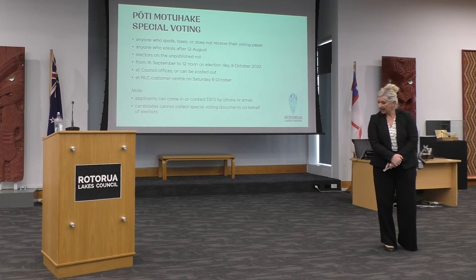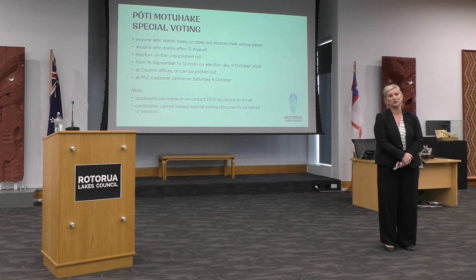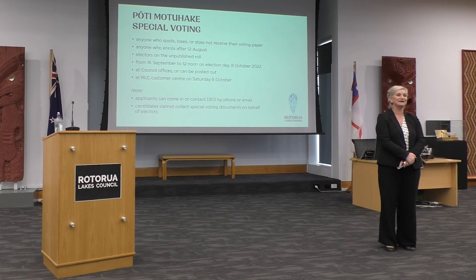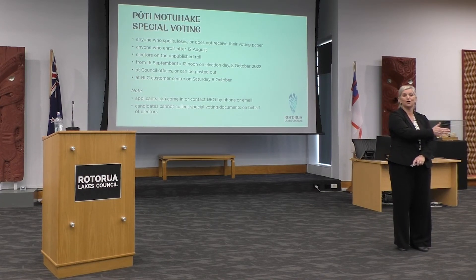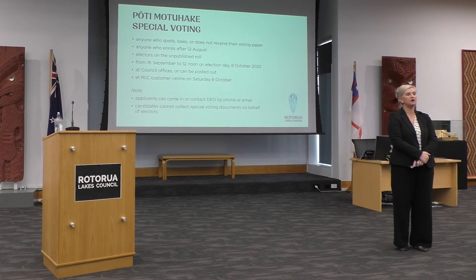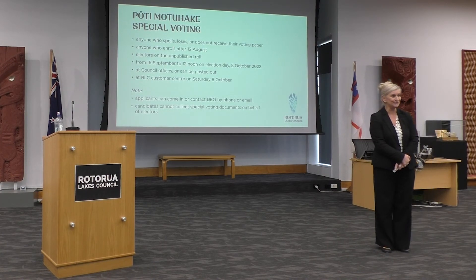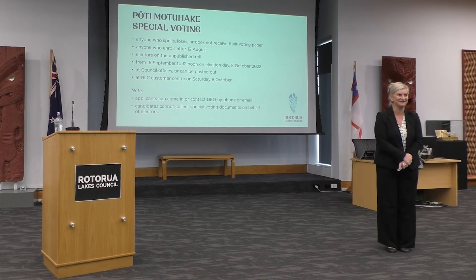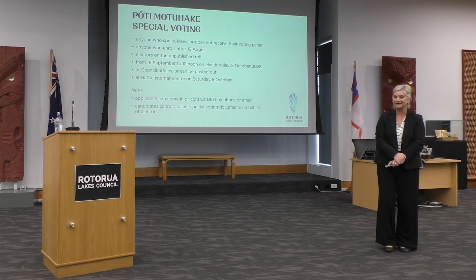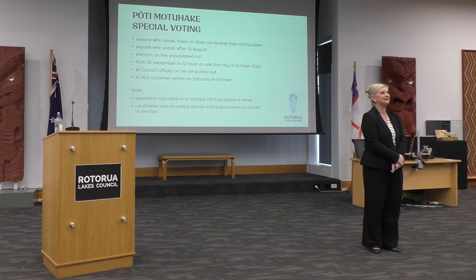Special voting is available for anybody who spoils, loses or does not receive their voting papers. It's also for anyone who has a last-minute missed enrolment — if you enrol after the 12th of August, you're not on the published roll but you can still vote by special vote. Special voting can occur from the 16th of September right through to election day. You can come in and cast your special vote here, or we can post out new forms. If anyone is running late and needs a last-minute vote, come into the customer centre to return your voting papers and do a special vote.